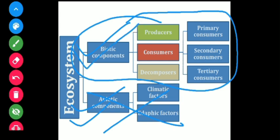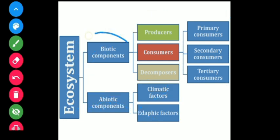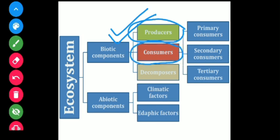The biotic components have been categorized into three main groups: producers, consumers, and decomposers. Producers are organisms that can prepare their own food — they have the ability to produce energy or food. Consumers do not have the ability to produce their own food, so they depend upon another organism for food or energy. Decomposers, usually bacteria and fungi, decompose and degrade organic matter and play a very important role in nutrient cycling.